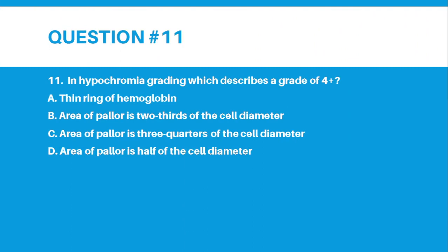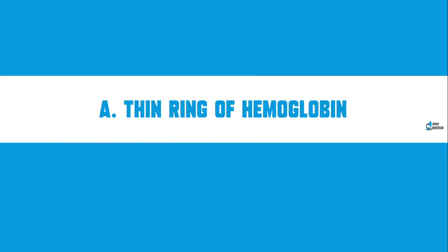Number 11: In hypochromia grading, which describes a grade of 4+? Letter A, Thin Ring of Hemoglobin. Letter B, Area of Pallor is two-thirds of the cell diameter. Letter C, Area of Pallor is three-quarters of the cell diameter. Letter D, Area of Pallor is half of the cell diameter. The correct answer for number 11 is Letter A, Thin Ring of Hemoglobin.